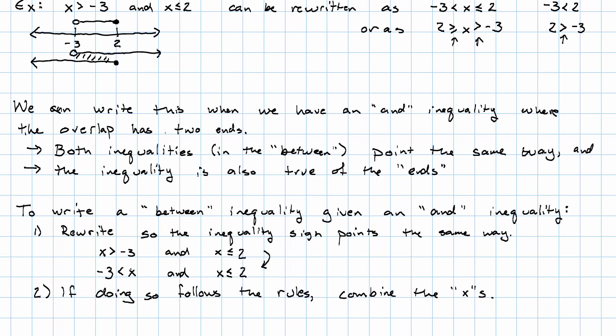If when we do so, we're following all the rules, now we can combine the x's. So, we say negative 3 is less than x, which is less than or equal to 2. This follows the rule that both inequalities point the same way. And it follows the rule that negative 3 really is less than 2.